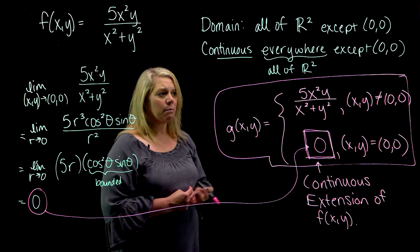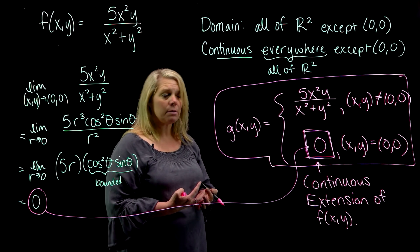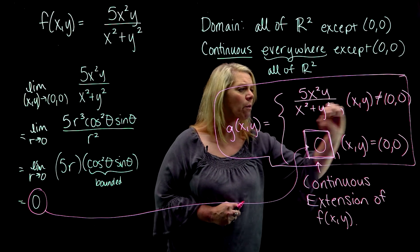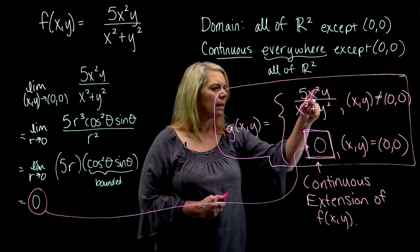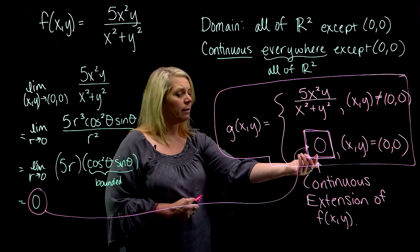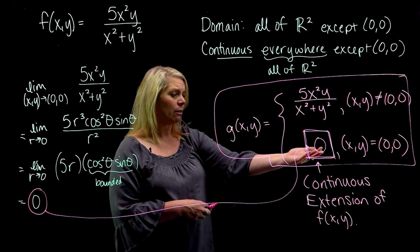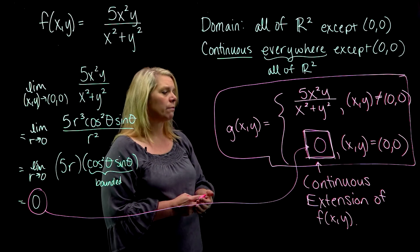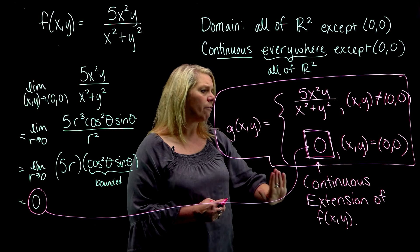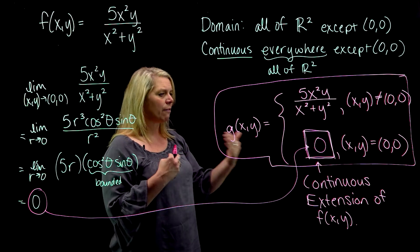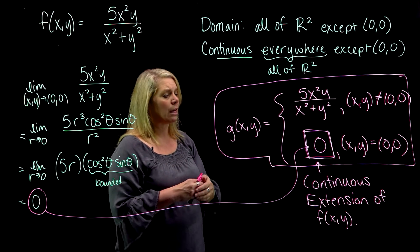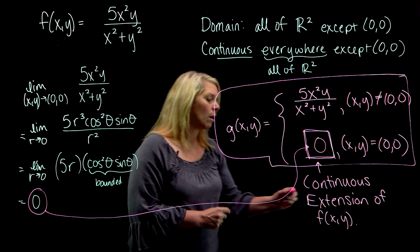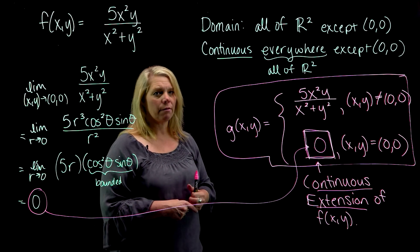Not every piecewise defined multivariable function is a continuous extension. It would be important that the limit as (x,y) approaches this point of this part is equal to the function output here. If this were some other number like 7 or 10 or negative 6 or 1 or 5, then it's not a continuous function. But there are several problems in our homework where they ask you to extend a function to be continuous at the origin or define a piecewise function that would make it continuous at the origin or define a continuous extension of the function.